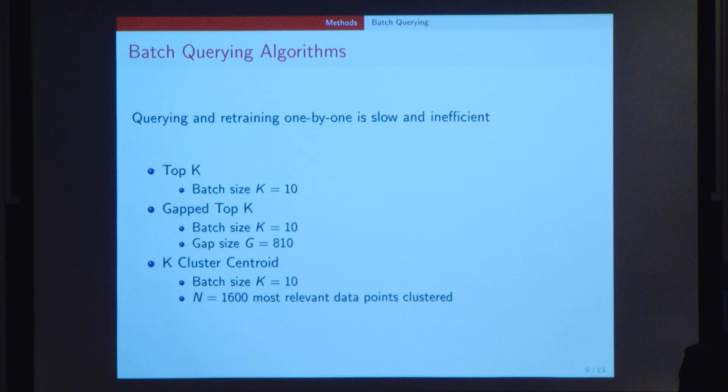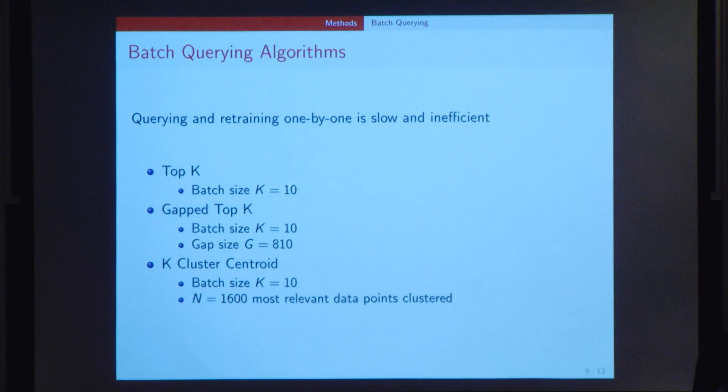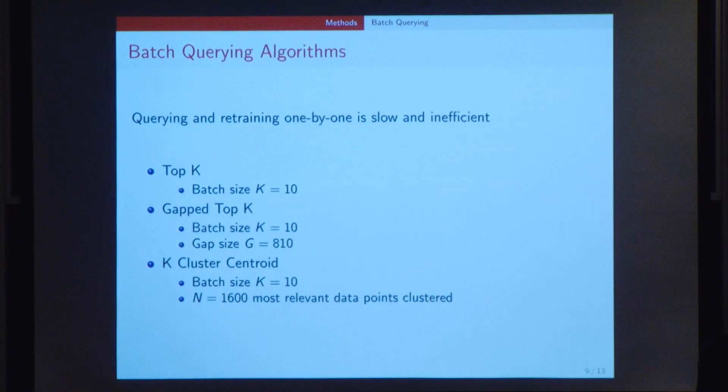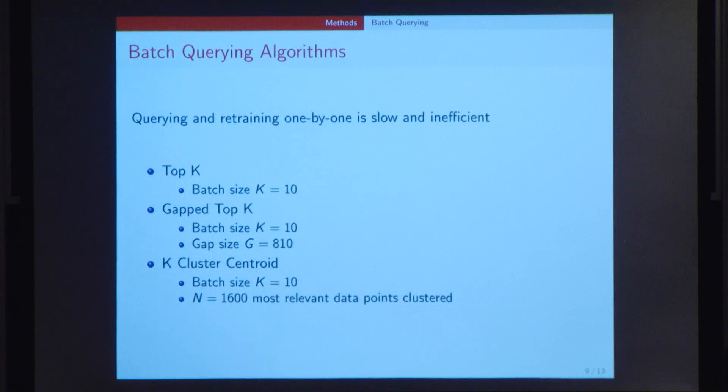One drawback of active learning is that each time you query a data point and add it to the training set, you've retrained the entire algorithm from scratch. This is suboptimal because it's very slow and inefficient. One way of solving this problem would be through batch querying. Here, rather than querying one by one, you would query in batches of a certain size. There are many ways to select these batches.